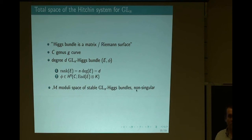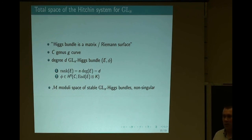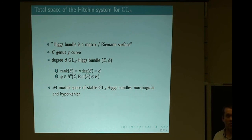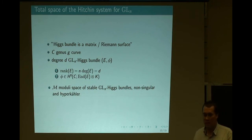What is important for us is that this moduli space is non-singular. Because of the Yang-Mills origins, it carries a very natural hyperkähler metric — in particular it has a natural holomorphic symplectic two-form. So we define it in algebraic geometry as a complex manifold, and with respect to this complex structure it has a natural holomorphic symplectic two-form. That is one of the spaces we will consider in these lectures.